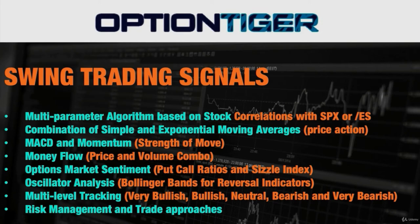We include risk management and trade approaches appropriate for a swing trading environment. For price indicators, we use a combination of simple and exponential moving averages — three different averages go into the algorithm. We also have the strength of the move, which is the momentum, going into the algorithm. For the price and volume combo, we use the money flow indicator; a video on that is included in the course. It combines both price and volume in the context of a bullish or bearish move. Other subjective elements are also covered in the course videos.